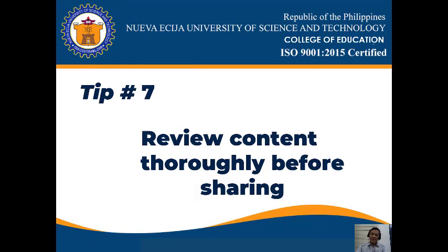Tip number seven: review content thoroughly before sharing. Reviewing content thoroughly before showing it to students is important to avoid any possibility that the content we are sharing is unreliable or inappropriate. We have to look for possible booby traps — content that might be objectionable or controversial. If you plan ahead, you are much less likely to create an issue or, worse, an unpleasant confrontation with a parent.